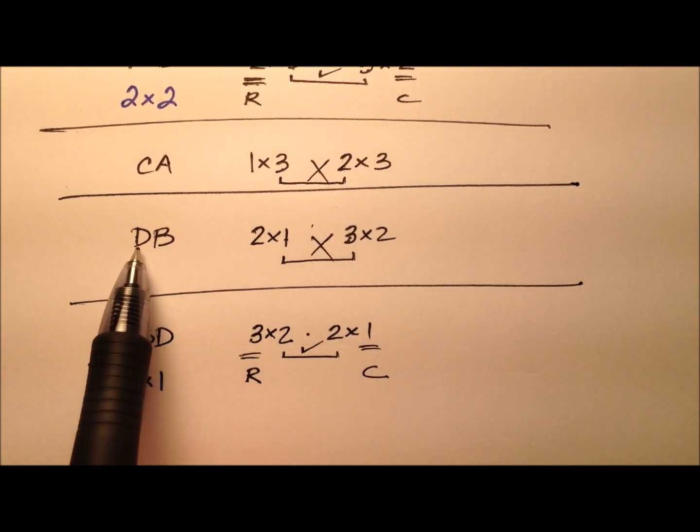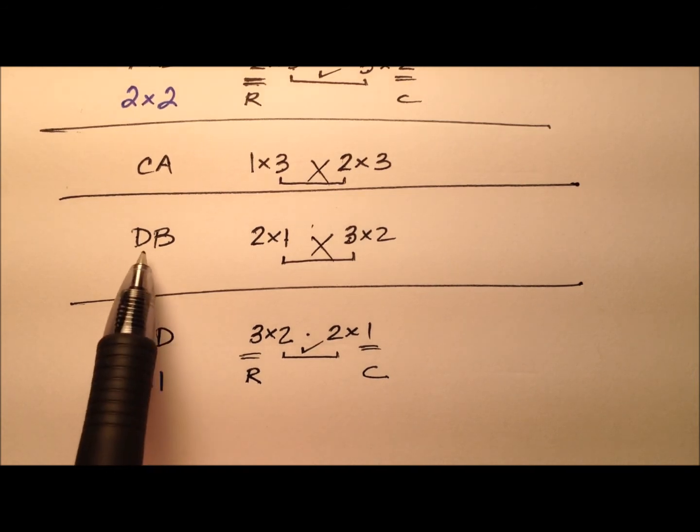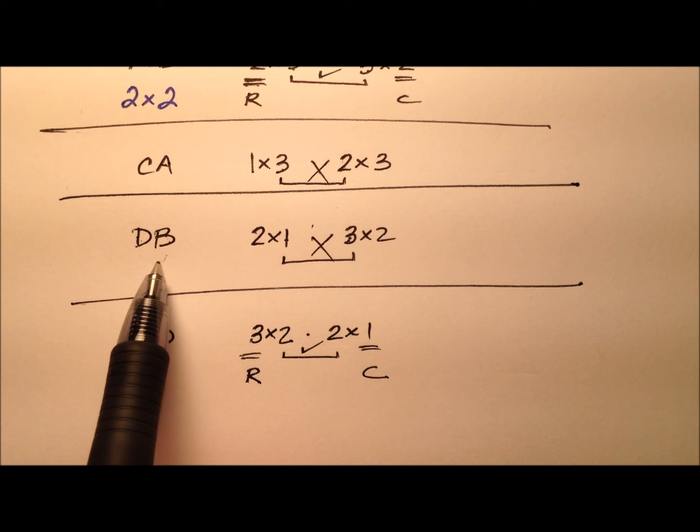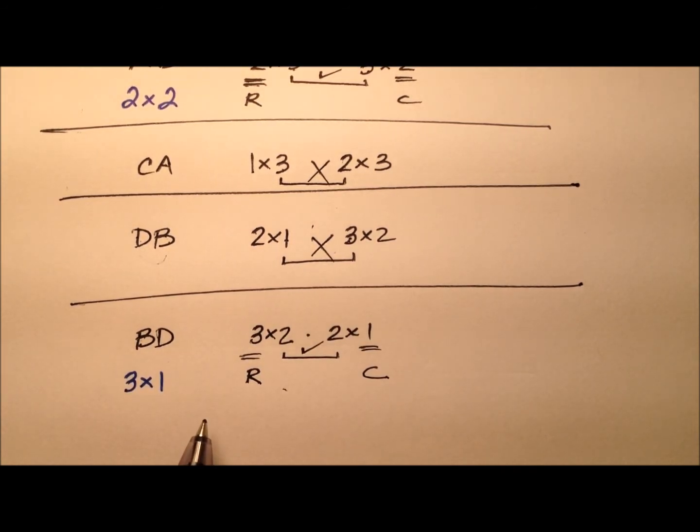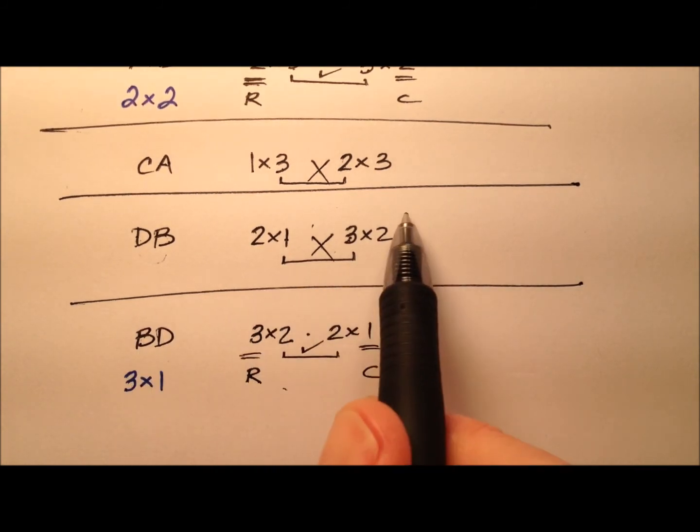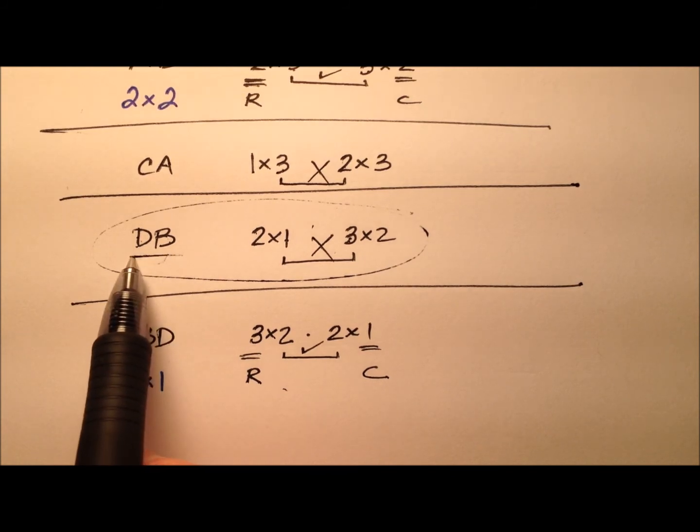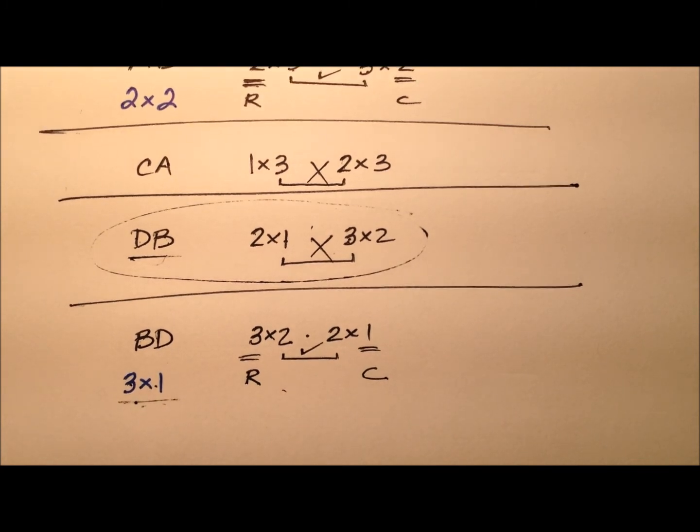And I think it's worth noting right now: we had the multiplication of D with B and then B with D. So the commutative property is what it looks like we're looking at. We just switched the order. And we can tell right here that the commutative property of multiplication does not hold for matrices. Because in this example, we couldn't even do the multiplication—it wasn't even defined. But here we could, and the product matrix had dimensions of 3 by 1.